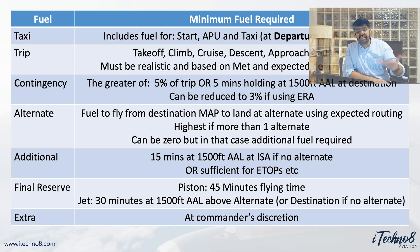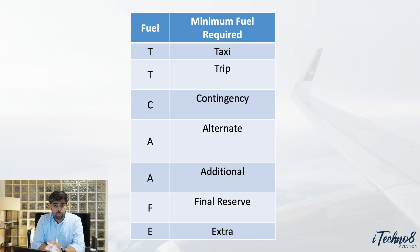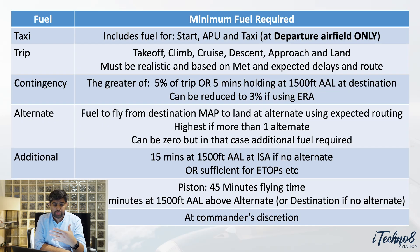Finally, there is extra fuel, which is what you could additionally take on. In the new EASA regulations they've also added discretionary fuel, which is essentially the same thing but more elaborated. If you see D for discretionary on an ATPL question, that's a new format slightly different from this one. This complete set — TT Cafe — gives you your minimum fuel required. This is how it's done in real life and how you're supposed to do it in exams.